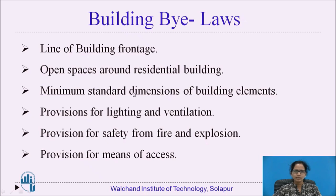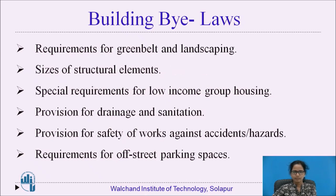These are the bylaws for different buildings — the points which should be considered: the line of the building frontage, open spaces around residential buildings, minimum standard dimensions of building elements, provisions for lighting and ventilation, provision for safety from fire and explosion, provision for means of access, requirements for green belt and landscaping, sizes of structural elements, special requirements for low income group housing, provision for drainage and sanitation, provision for safety of works against accidents and hazards, and requirements for half street parking space.